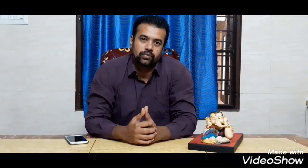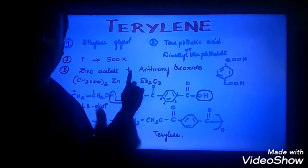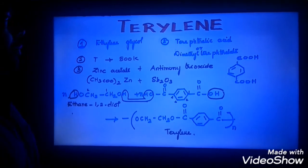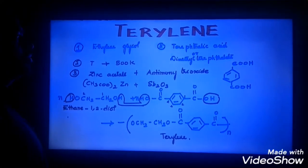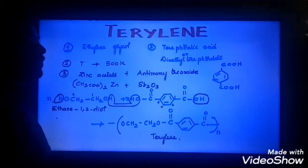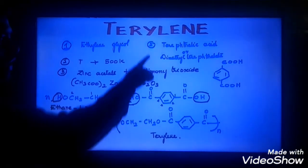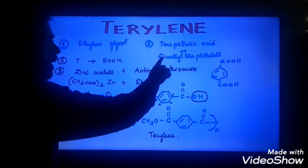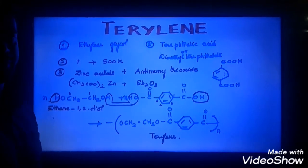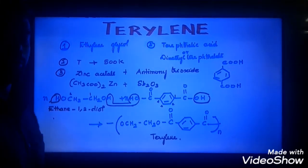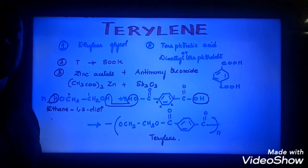In this session we will discuss the preparation of Dacron, otherwise called as Terylene. How shall we prepare Terylene? It is prepared from ethylene glycol and terephthalic acid. Terephthalic acid can also be called as dimethyl terephthalate. So we are discussing about Terylene, which is a condensation polymer.